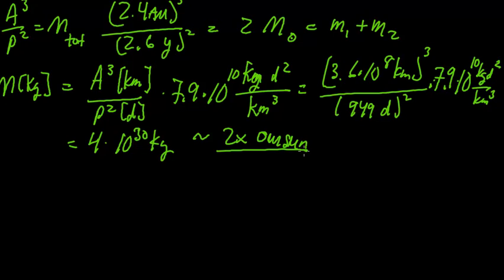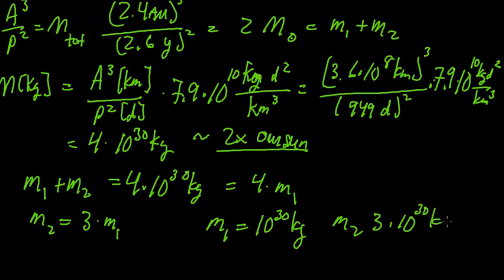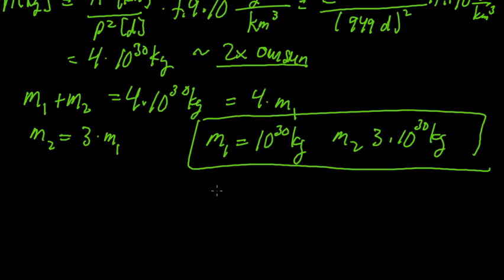Finally, now that we have the mass combined, what we have is M1 plus M2 is 4 times 10 to the 30th kilograms. But I also have that M2 is equal to 3 times M1, which means this is 4 times M1. So M1 is 10 to the 30th kilograms, and M2 is 3 times 10 to the 30th kilograms. And those are the final answers. Another way to put it also is that M1 is about a half of a solar mass and M2 is 3 halves of a solar mass.